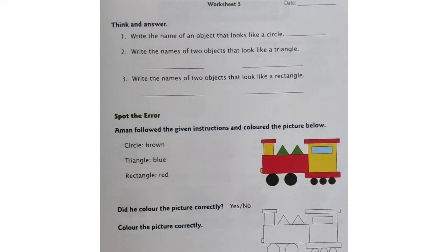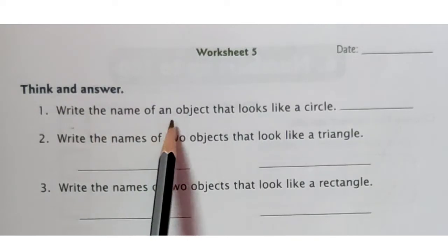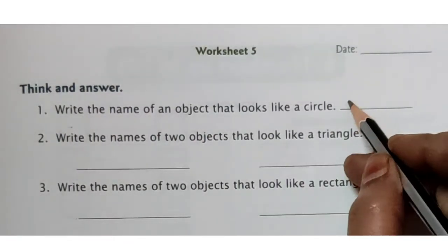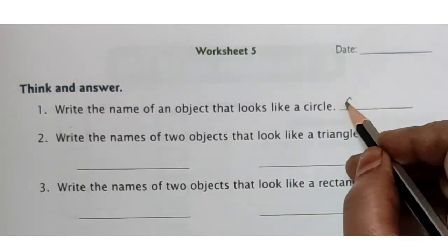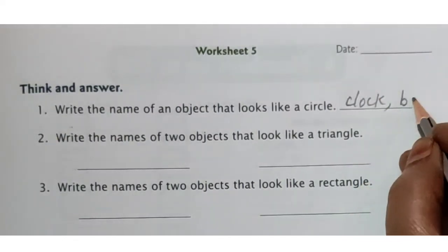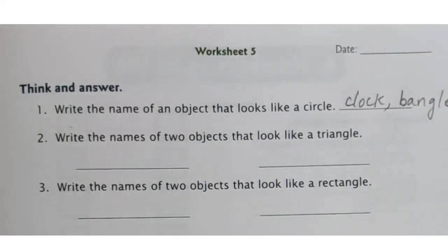Here we have the heading: think and answer. Now, let us begin with the first question: write the name of the object that looks like a circle. Come on, children, give me examples of objects that look like a circle. Yes, it is clock. Yes, clock looks like a circle, and bangle. You can write these two objects that look like a circle.